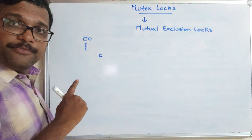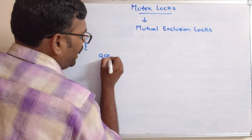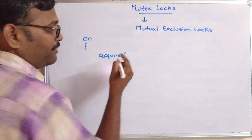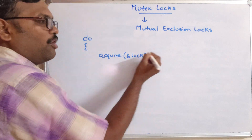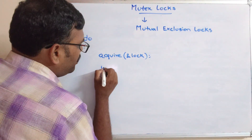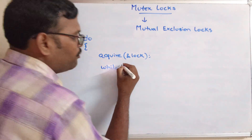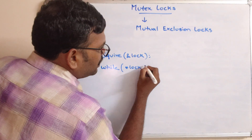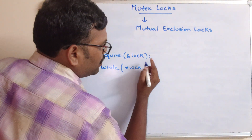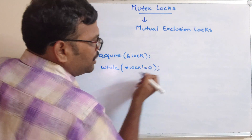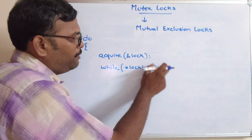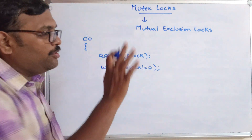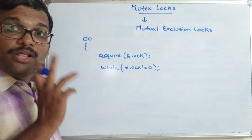First is the entry section, which we are calling as acquire the lock. Here, instead of giving a normal variable, we are passing the reference — ampersand lock — so the address of that lock will be given. Then the waiting state: while star lock is not equal to zero. So until the lock becomes released, the process will be in this while loop. The process comes out of the while loop whenever the lock value becomes zero, which means the lock is available.